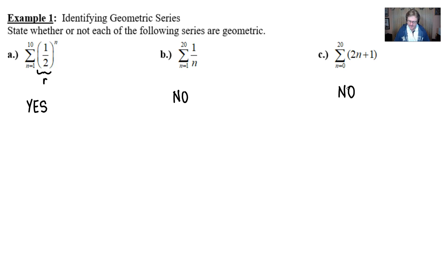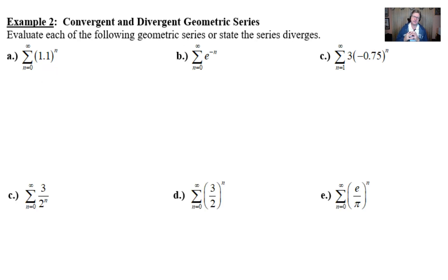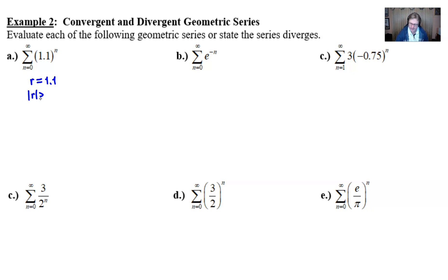Now let's look at our second example: evaluate each geometric series or tell me that it diverges. Part a: the summation as n goes from zero to infinity of 1.1 to the n. First, verify it's geometric — it is. Then look at r: r is 1.1. The absolute value of that r is definitely greater than or equal to 1, which means we are going to diverge.